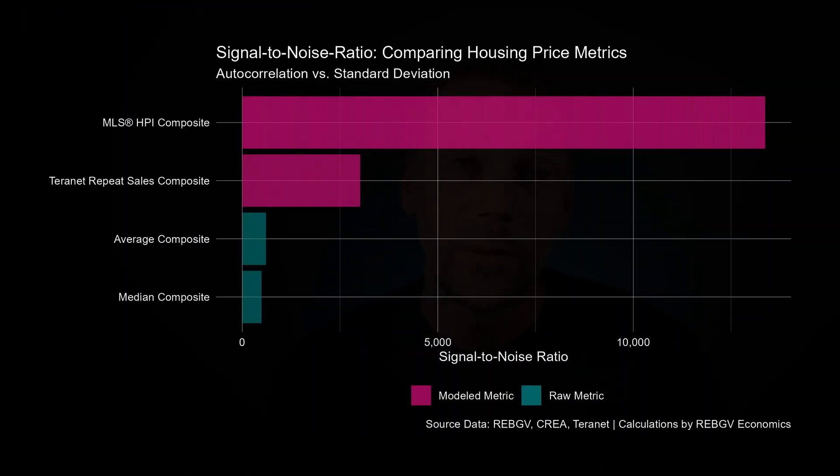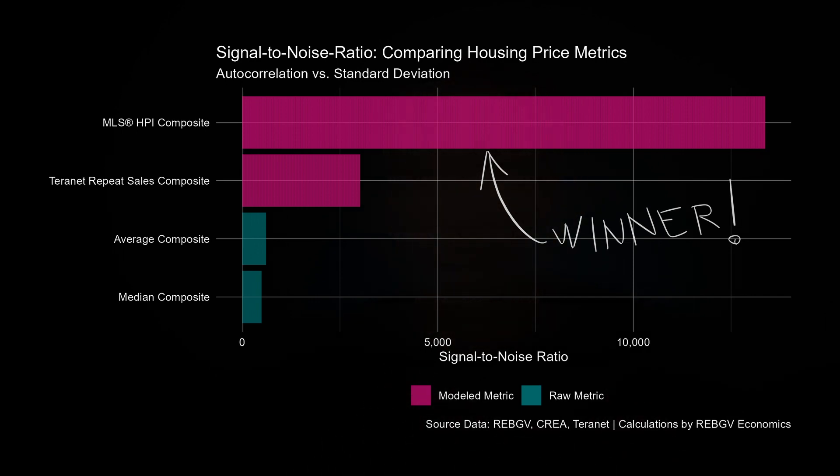Here's a plot doing just that for each metric we've looked at so far. We can see a pretty clear winner when we compare these metrics across this one dimension. But it's important to note that this is just one way of comparing them, and it doesn't fully capture all of the trade-offs discussed. For most casual observers, modeled metrics such as the MLS HPI offer a nice and clear signal of trends in the market, even if they may appear laggy at certain times. But if you're a real estate professional, it's probably worth keeping tabs on at least one modeled metric and one raw metric to get a complete picture.